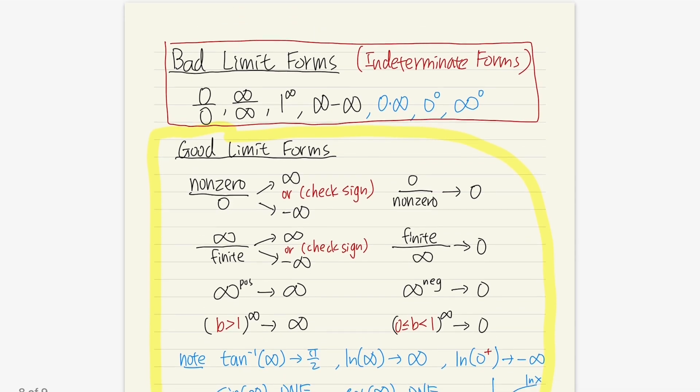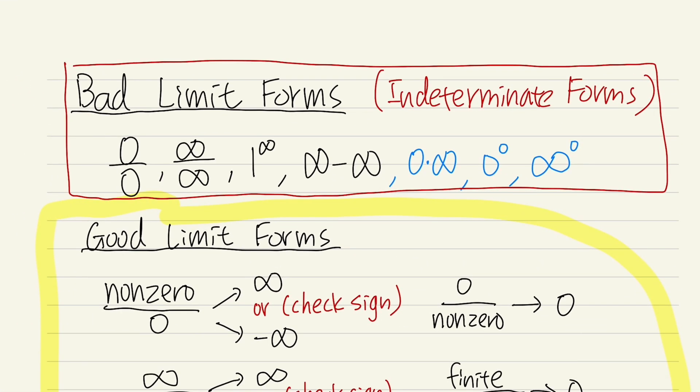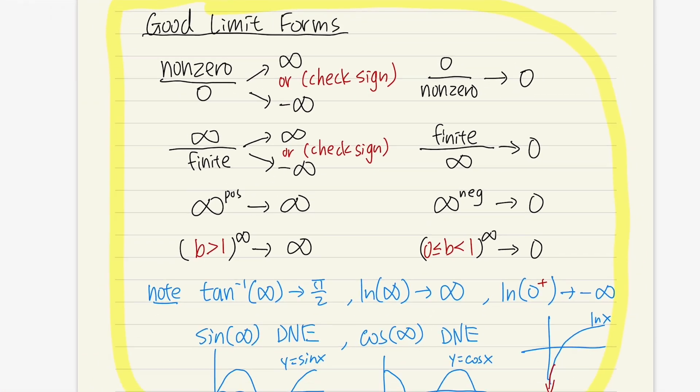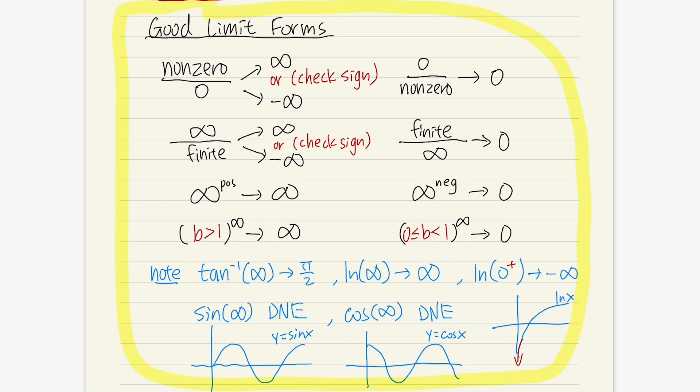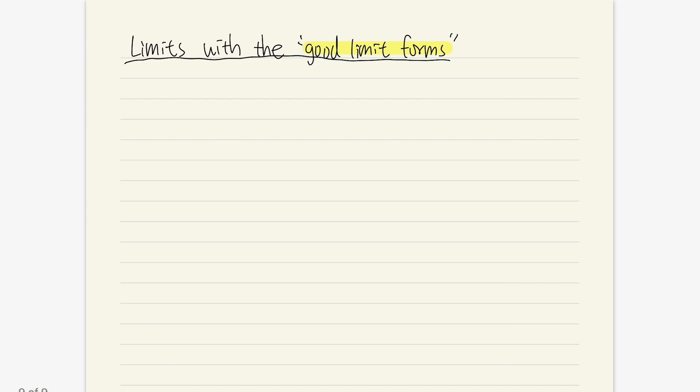Remember, these are the bad ones. We have seven bad ones here, but the ones that I put down in the box right now, they are the good ones. Let me demonstrate how we can make this work.